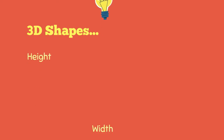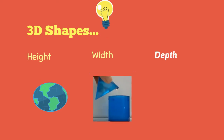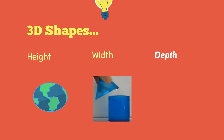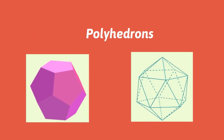Three-dimensional shapes, or 3D shapes, have height, width, and depth. A sphere and a cone are examples of 3D shapes. Many 3D shapes are considered polyhedrons. Let's take a look at the properties of polyhedrons.